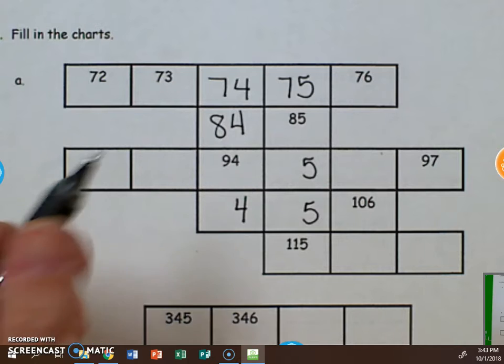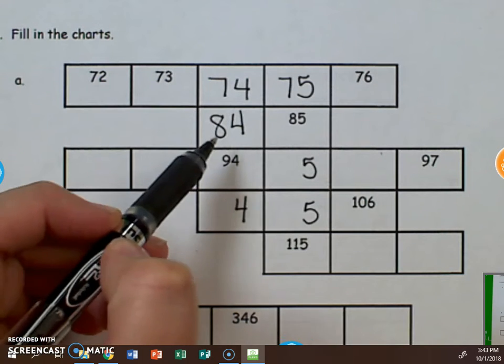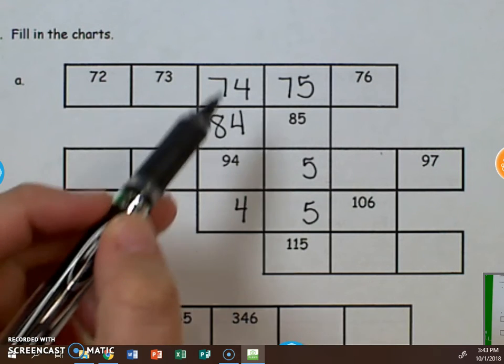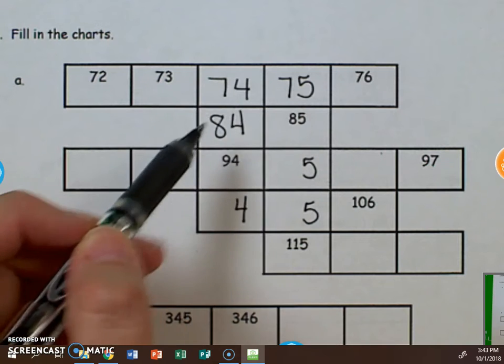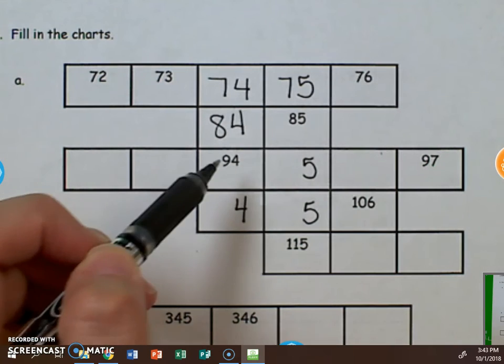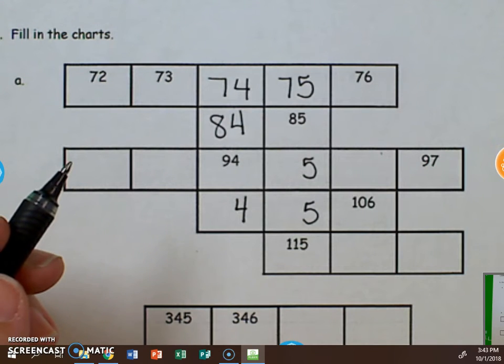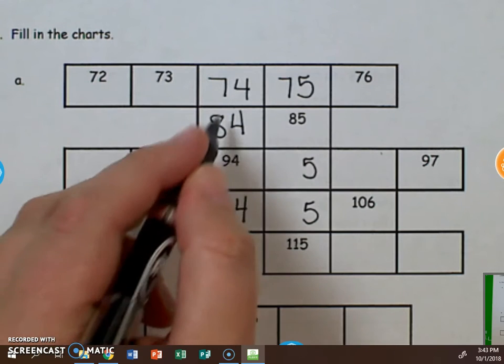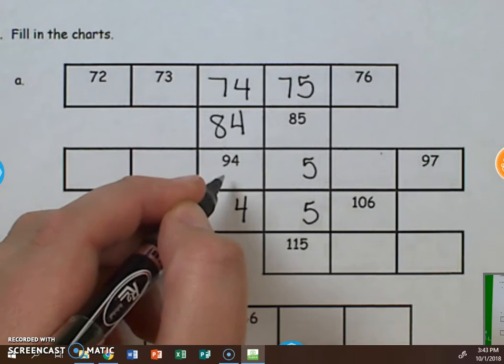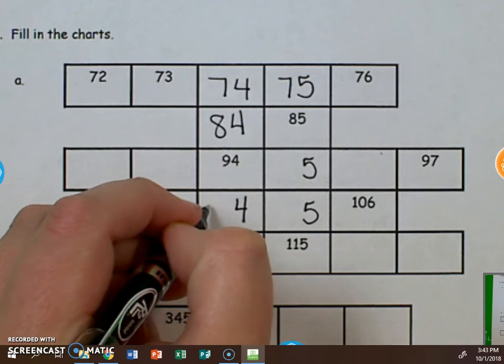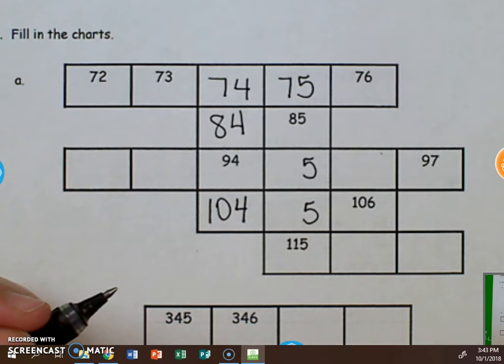Looking at those patterns once again. When we go down a column, we can notice that we start at 74, 84, 94. That must mean that we are counting by tens because the tens place changes. It increases by one more. So 94 plus 10 is 104.